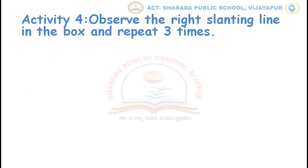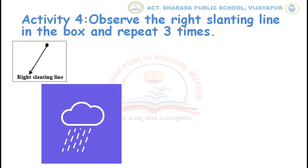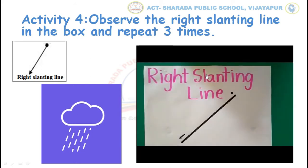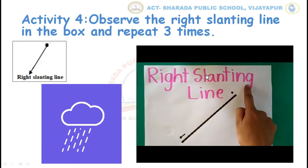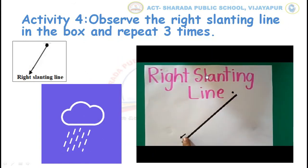Now, let us do our 4th activity. How to trace right slanting line? Always draw a right slanting line from upward to downward. This is right slanting line — start from the dot and follow the arrow.